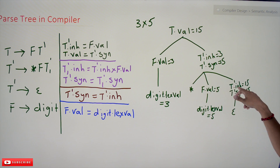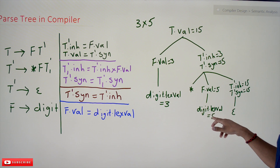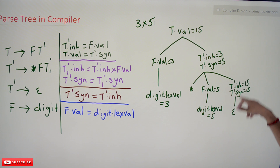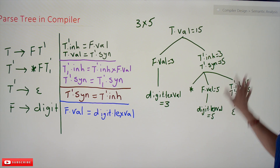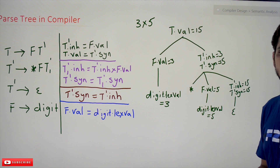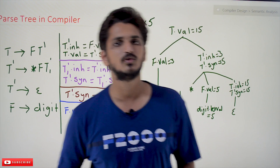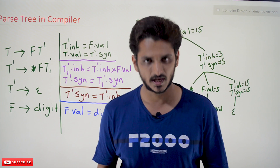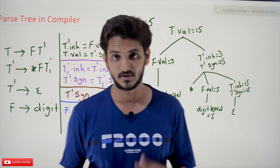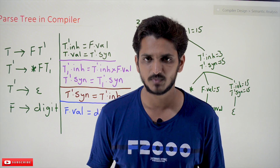T' is further elaborated as star F T'. That F is evaluated with 5. Then T' evaluates with epsilon. This is how, when values are shown on the parse tree like this, we call it an annotated parse tree. Hope you understand the concept. If you have any questions, please post them in the comment section below. Thanks for watching — if you haven't subscribed, please subscribe and press the bell icon for the latest updates.